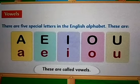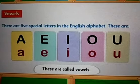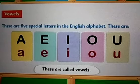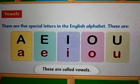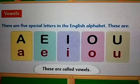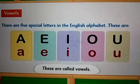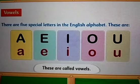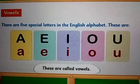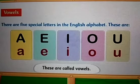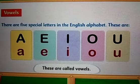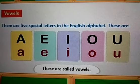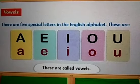The first one is vowels. There are five special letters in the English alphabet. These are A, E, I, O, U. These letters are called vowels.